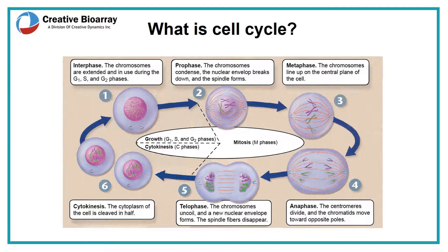What is cell cycle? Cell cycle refers to the set of events through which a cell grows, replicates its genome, and ultimately divides into two daughter cells through the process of mitosis.